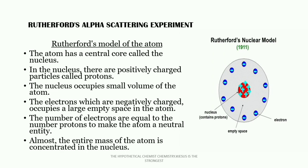He said the electrons, which are negatively charged, occupy a large empty space in the atom. He also said that the number of electrons are equal to the number of protons to make the atom a neutral entity. In a neutral entity, the number of protons equals the number of electrons, which Joseph John Thompson discovered. Lastly, he said that almost the entire mass of the atom is concentrated in the nucleus. We have a diagram here — the Rutherford nuclear model — showing the nucleus containing protons, and empty space around the nucleus within which we find the electrons.